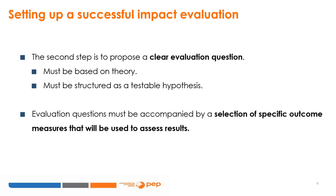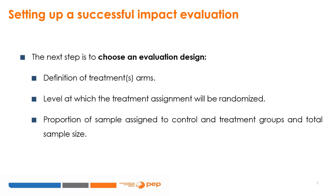These outcomes are also referenced in the power calculations used to determine sample sizes, as covered in previous lessons. The next step is to choose an evaluation design. A full specification of an experimental design can be summarised in three key elements.